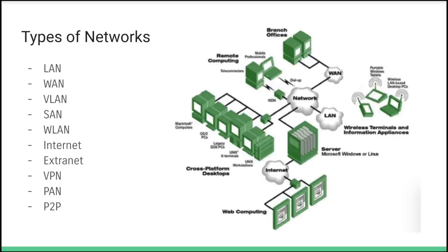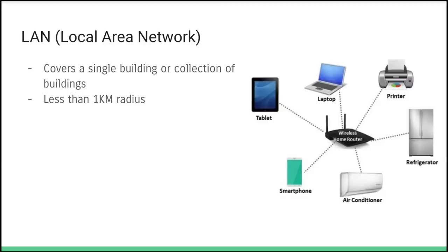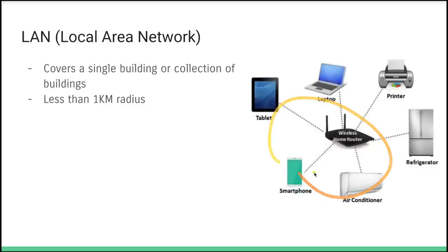One of the big concepts covered is the different types of networks. A network is a collection of computers, but they can have different configurations. The most common is the local area network, or LAN — something like what you'd have in your house, connecting different devices together and also serving as an interface to the internet. A LAN generally covers a single building with a radius of one kilometer or less, such as a house or a school.